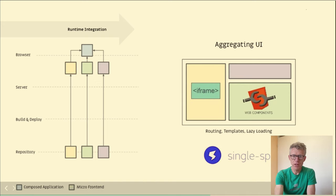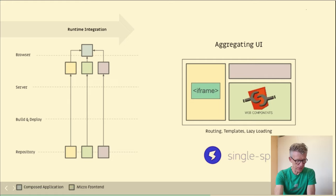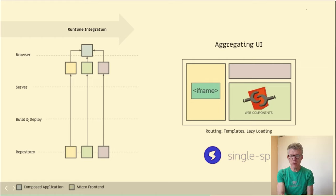Runtime integration: the aggregation will be done at runtime in the frontend of the application. We don't use a package.json at this point anymore — we do it in the frontend. We use two techniques globally: iframes or web components. Iframes is a very old technique, but I'll discuss it briefly. A web component is a technique to build micro frontends. In this context, micro frontends is an architectural approach, and a web component is the technique to build them.